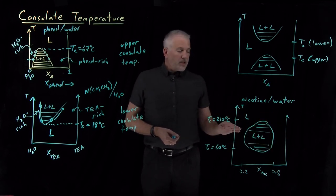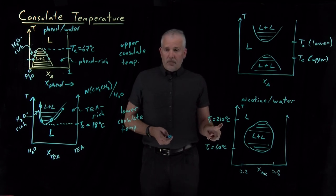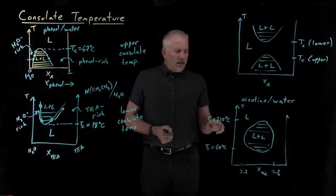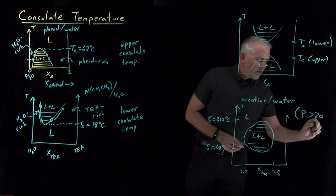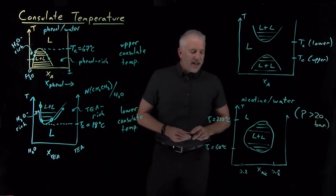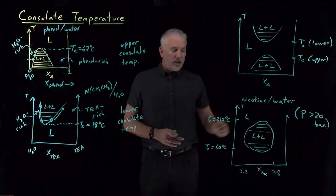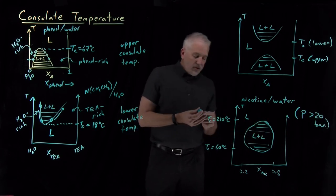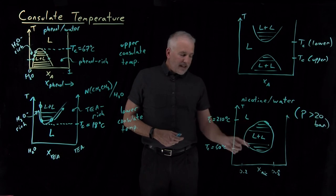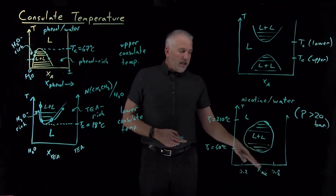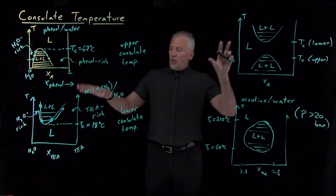I can mix nicotine and water at various concentrations — either a very water-rich solution or a very nicotine-rich solution — or at any composition, as long as the temperature is above 210 or below 60 Celsius. Note that 210 Celsius is already above the boiling point of water, so this phase diagram applies at high pressures where the boiling point of water is well above 100 Celsius. Still, it's interesting that this pair of solvents has both an upper and lower consulate temperature, creating an island of miscibility. Liquid-liquid temperature-composition diagrams show a wide range of different behaviors.